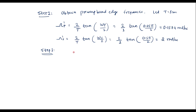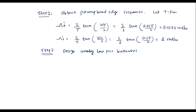We are supposed to design an analog low pass filter. It is not possible to design a digital filter directly; first we must design the analog filter and then convert the analog filter into a digital filter. So we have to design the Butterworth filter.